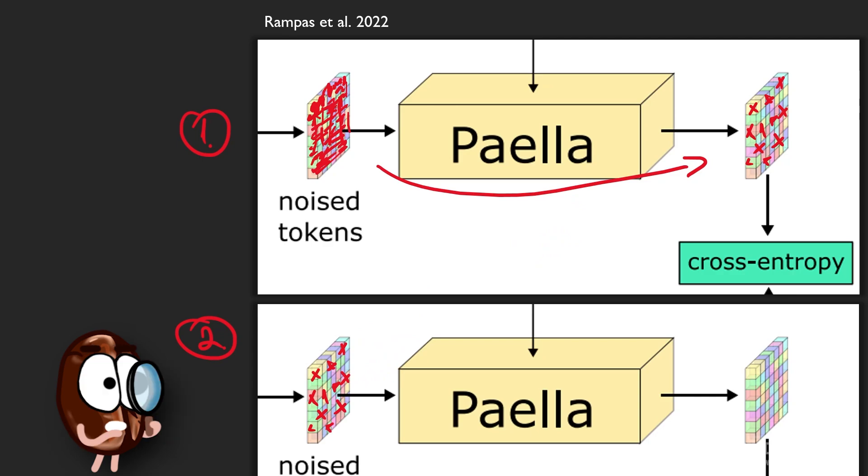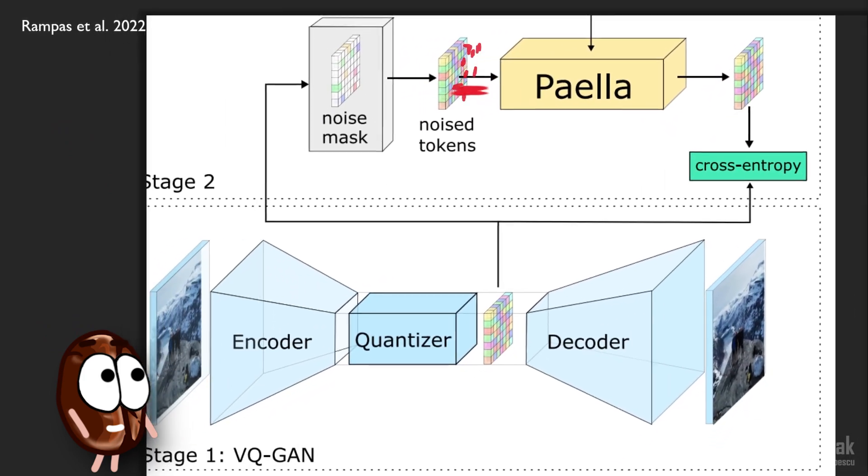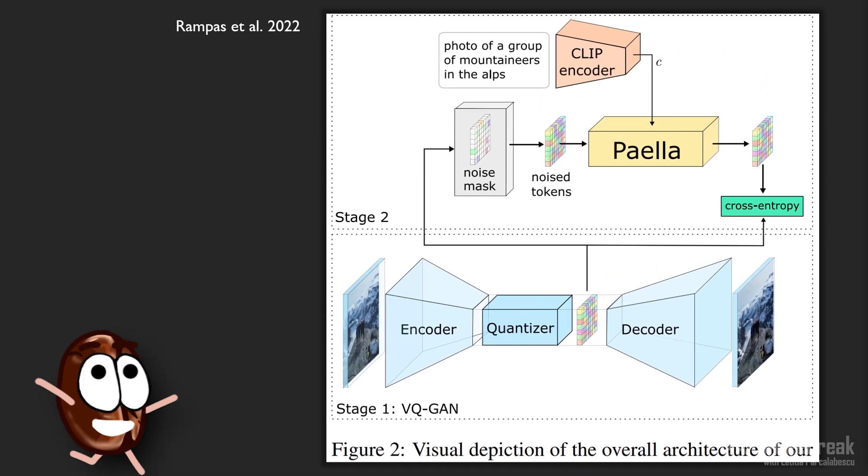If you think this is very much like masked git in Fenaki, which we have seen in the last video, you are right. The difference here is that the authors do not use masked tokens, but random tokens. Because here at inference we are still in the latent space, the decoder reconstructs the pixel space of the represented image, and this was Paella, in a nutshell.